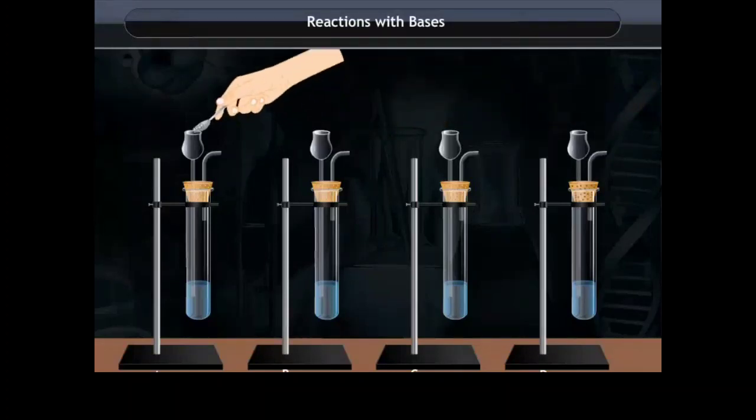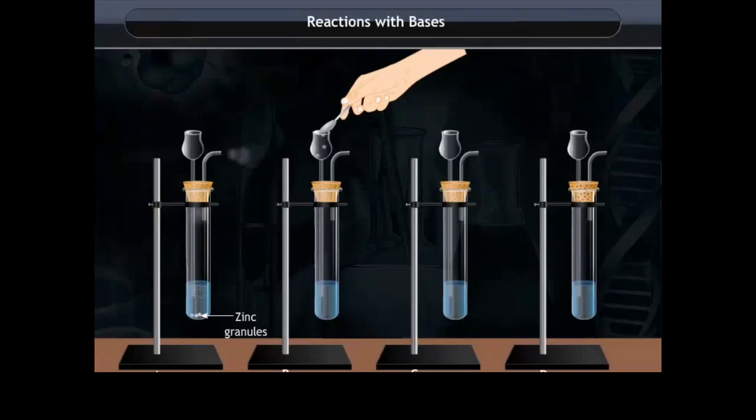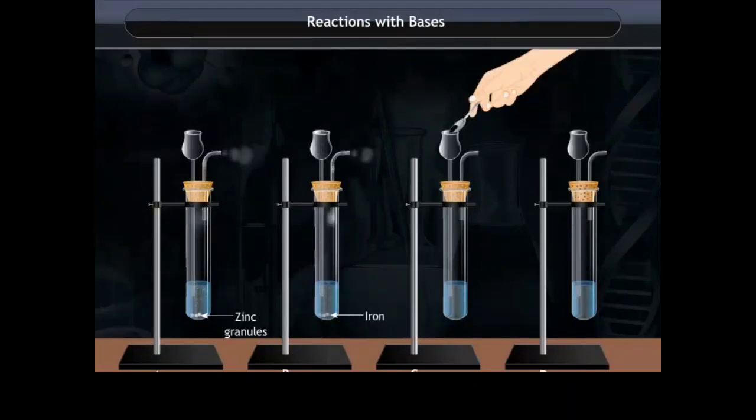Add small pieces of metals, aluminum and zinc granules in test tube A and B. Add charcoal and sulfur in test tubes C and D respectively.